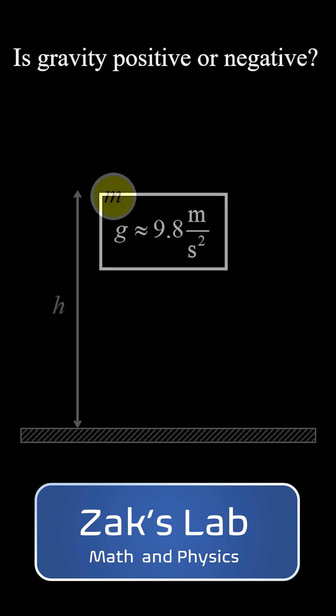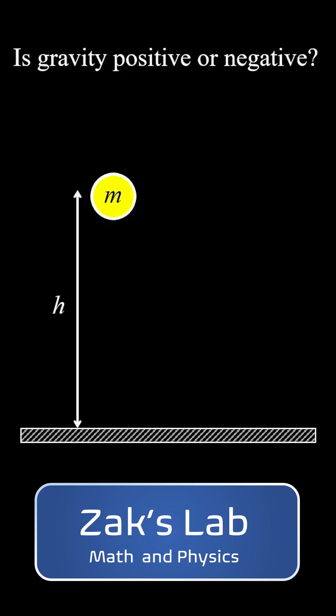But what about the acceleration caused by gravity in a free-fall problem? Gravity is inducing a downward acceleration with magnitude g or 9.8 meters per second squared. This acceleration is a vector with direction, and in a one-dimensional problem we can indicate that direction with a plus or a minus sign.